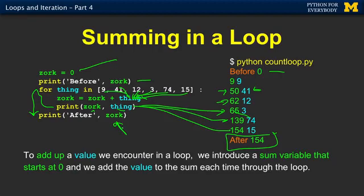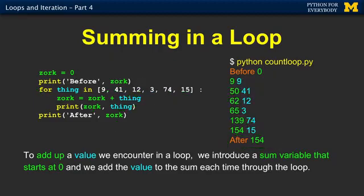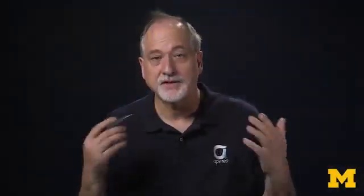You wouldn't print all this stuff out, but at the end, the difference between the count and the total is that instead of adding one each time, you add the thing you're totaling up. That's how we compute totals.